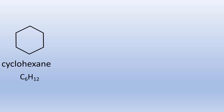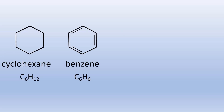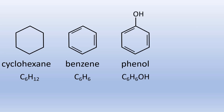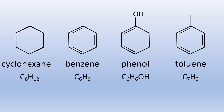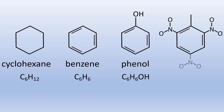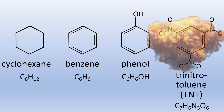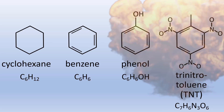Ring structures hugely extend carbon's versatility. A six-carbon ring gives us cyclohexane, benzene, phenol, and toluene, for starters. If we add three nitro groups to the toluene, we get trinitrotoluene, otherwise known as TNT, a powerful explosive.